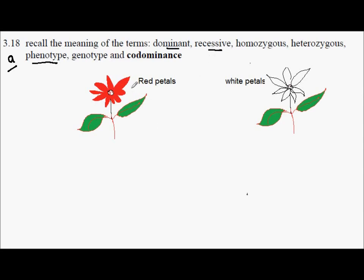In the image, you can see a red petal and a white petal flower. These flowers are of the same species of plant. The characteristic that we can see, red and white, are known as the phenotype. The phenotype is what we can see.